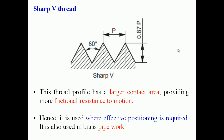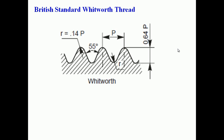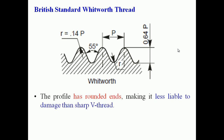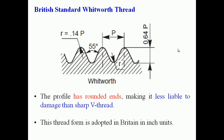The British Standard Whitworth thread has an included angle of 55 degrees and a depth of 0.64 times the pitch. Its profile has rounded ends, making it less liable to damage than the sharp V thread, since sharp corners create stress concentration and tend to fail. This thread form was adopted in Britain in inch units.